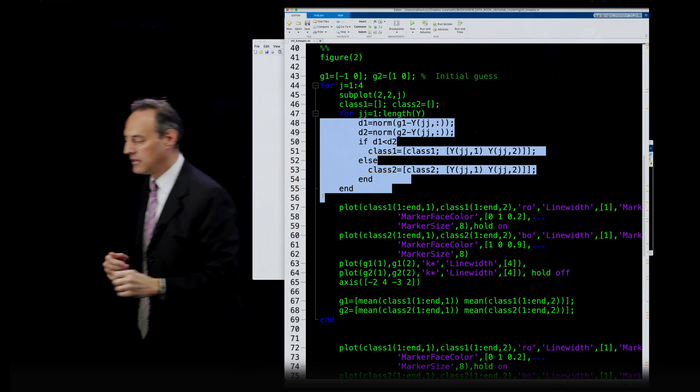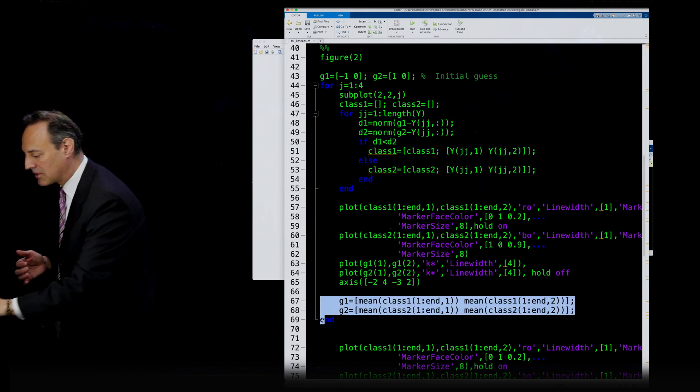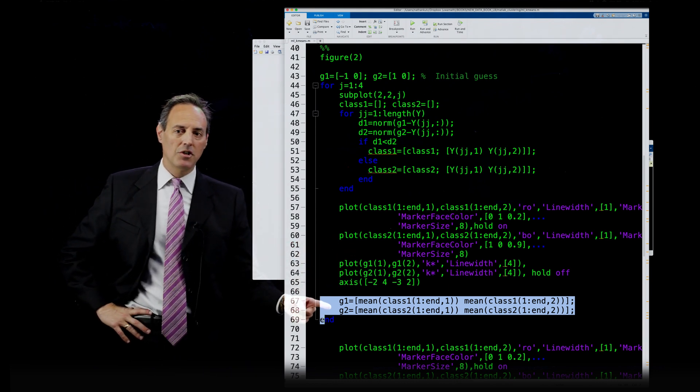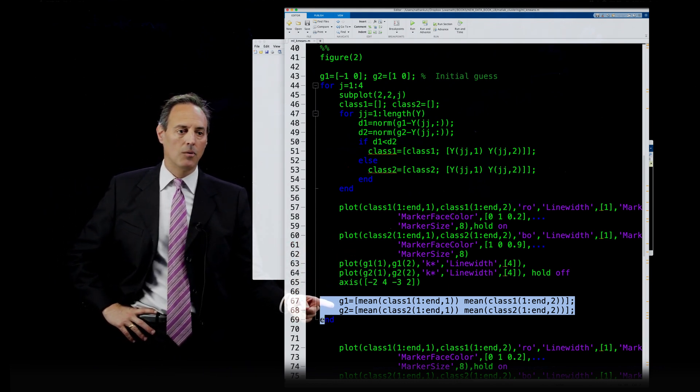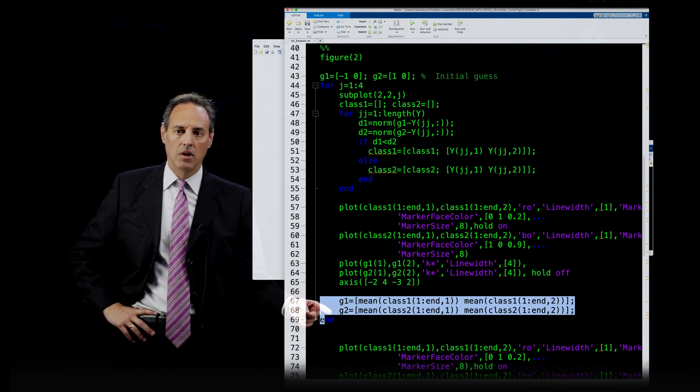Now, once I've done all this and got my classifications, I'm going to plot some stuff here, but here's the main thing that happens at the end. Once I do this, my new G1 and G2, I just go look and see where's the mean of the clusters of class 1 and class 2.